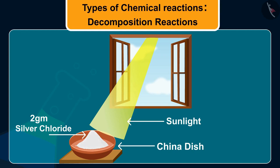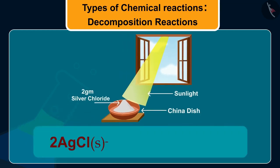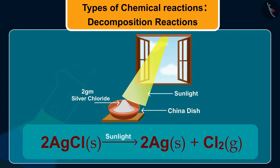This is because the sunlight has caused decomposition of silver chloride into silver and chlorine. The reaction for this is silver chloride on decomposition by sunlight breaks down to form silver and chlorine.